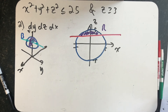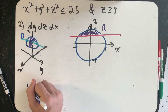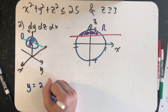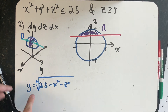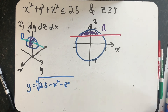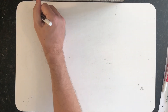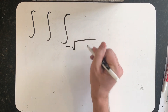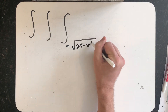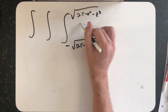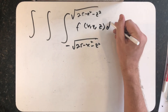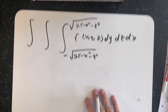Solving the sphere equation for y: subtract x squared and z squared from both sides, then take the square root to get plus or minus the square root of 25 minus x squared minus z squared. So y runs from negative √(25 − x² − z²) to positive √(25 − x² − z²). That gives the first bounds, and we can begin writing the iterated integral: integrate f(x, y, z) dy first, then dz dx.